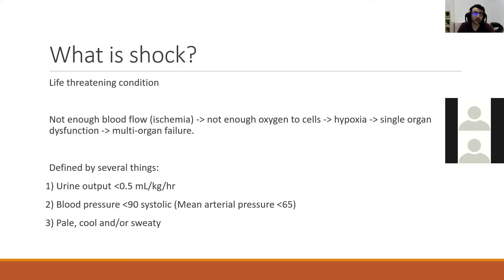You spot shock mainly by three things. The main two to focus on: first, urinary output — a low urine output of less than 0.5 mL/kg/hr indicates the person is shocked. Second, blood pressure — a systolic less than 90. Third, symptoms: if they're pale, cool, or sweaty, that's an indication of shock because there's not enough perfusion throughout the body.